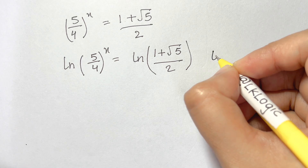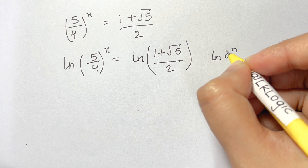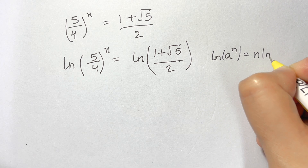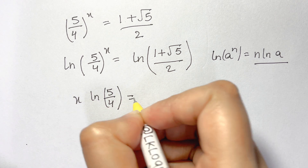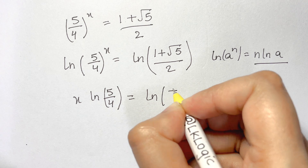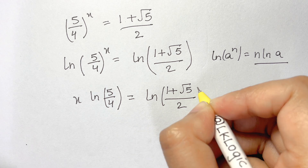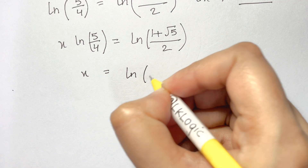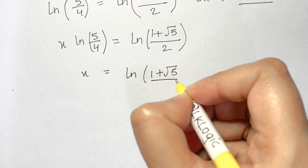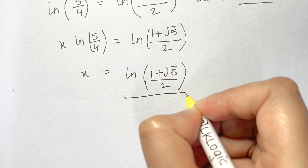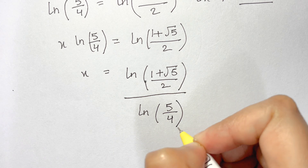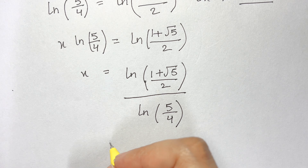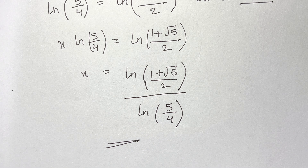Using the log power rule, ln(a^n) = n·ln(a), we get x · ln(5/4) = ln[(1 + √5)/2]. Solving for x: x = ln[(1 + √5)/2] / ln(5/4). That is the final answer. Thanks for watching and supporting LK Logic!